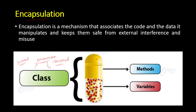Encapsulation is nothing else but protecting your data and code and keeping them safe from external interference or misuse. This is obtained through the concept of class and also through access specifiers, which you will learn in the future. Encapsulation is essentially tying up data and operations into a single unit, and class is the main component that helps us perform this encapsulation.